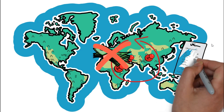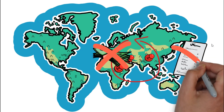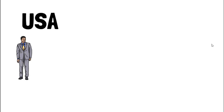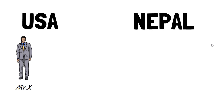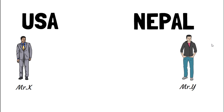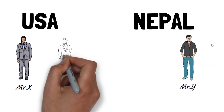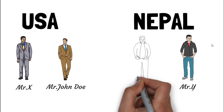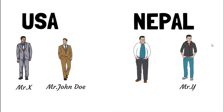There is also inconsistent practice of record keeping. To understand Hundi, consider this example: Mr. X, who is in America, wants to send some money to Mr. Y in Nepal. He will go to Mr. John Doe, a Hundi operator, and ask him to transfer the funds. Mr. John Doe will contact Mr. Ram, a Hundi operator in Nepal. Mr. Ram will give the money to Mr. Y on behalf of Mr. X.